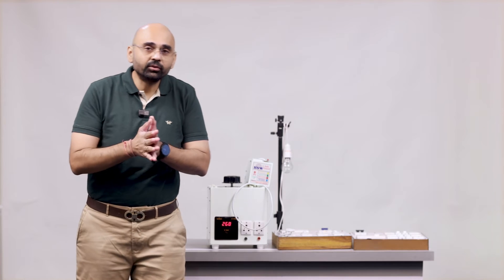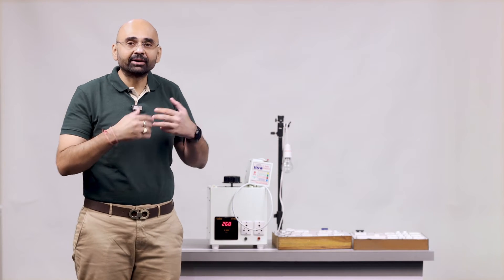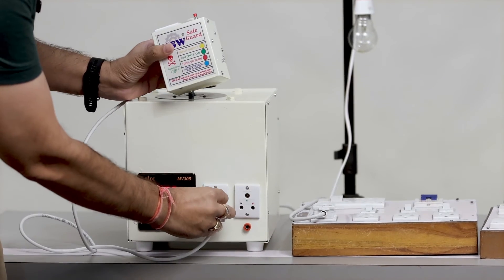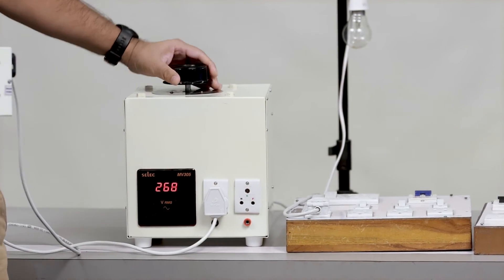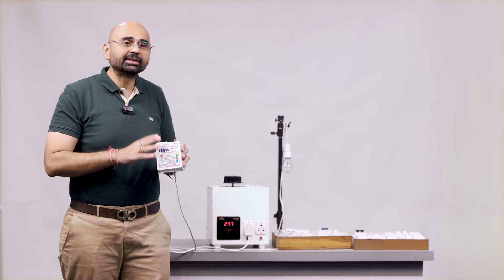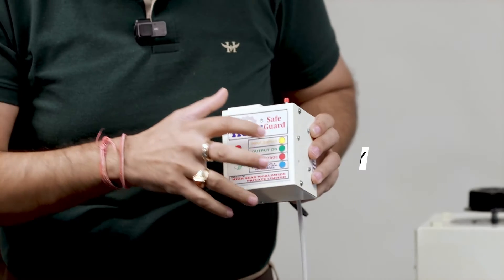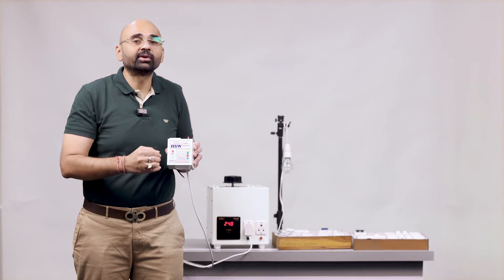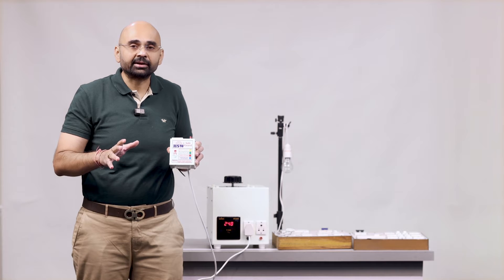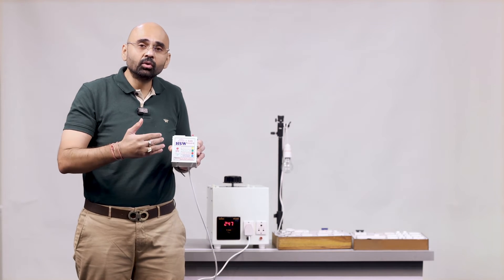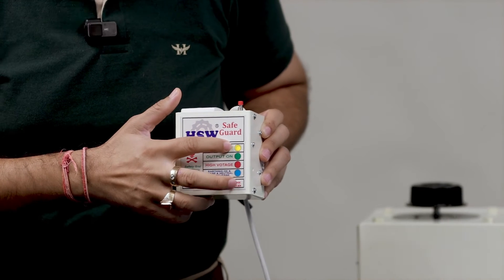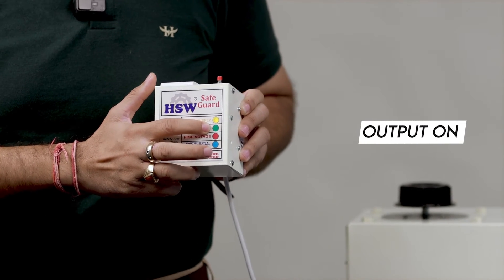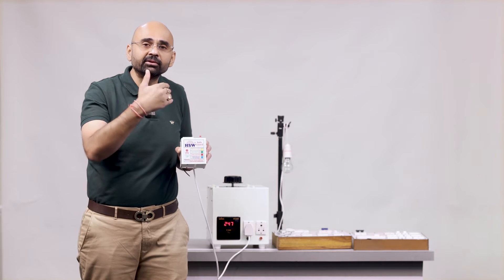So now what we do is from variac we will give power supply to our safeguard like this. Now as soon as we have given power supply to the safeguard you can see the yellow light is on. Now whenever you start device for the first time it means the device is reset. So it will take two minutes to pass on the power supply.